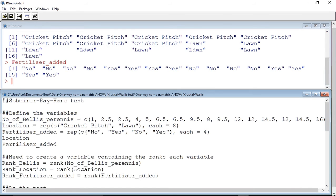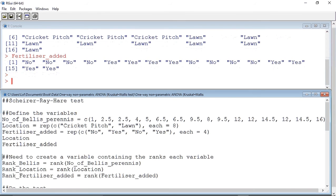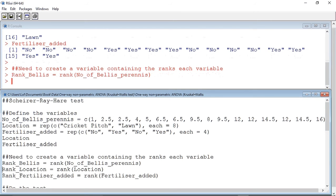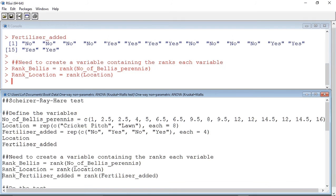So let's now do the test. The first thing that we must do is rank each variable that we entered and put it in a new variable. So I'm going to rank the number of Bellis perennis and put it in the variable rank_Bellis. Similarly, I'm going to rank the location data and place it in the variable rank_Location. And I'm going to rank the fertilizer added data and place it into the rank_Fertiliser_added variable.